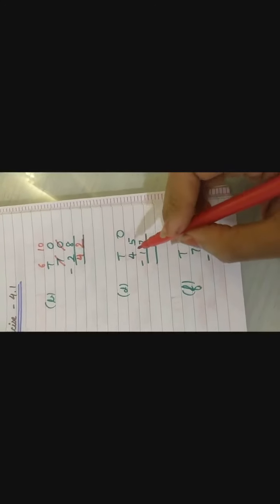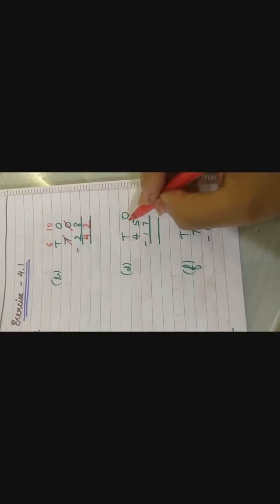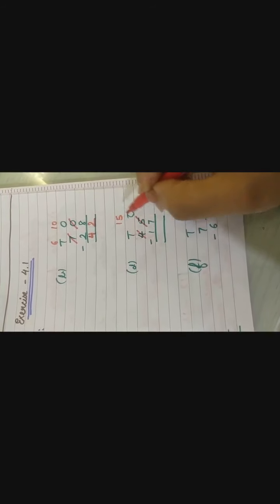Next. 45 minus 17. So 5 me se 7 ja sakta hai? No. Then also we have to take borrow. So either kya hoga 15. Either bacha ka 3. Because we have given borrow. 5 ko humne 1 de diya.